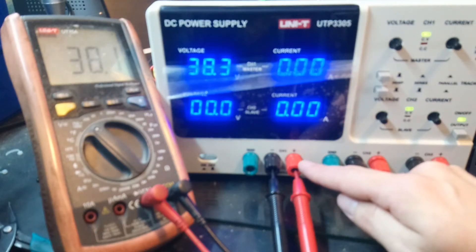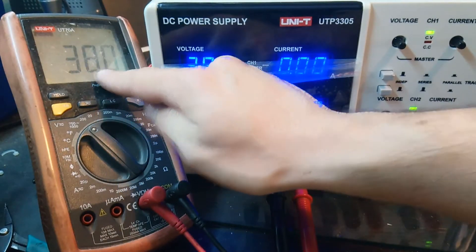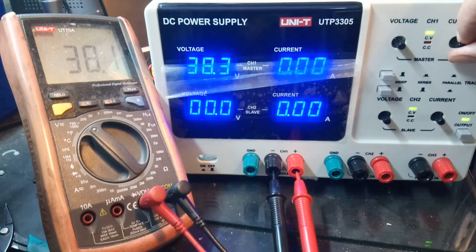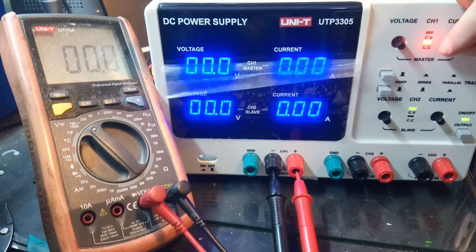That voltage is coming out from the connector. You can see it on the multimeter. And if I limit the current, the voltage goes to 0.